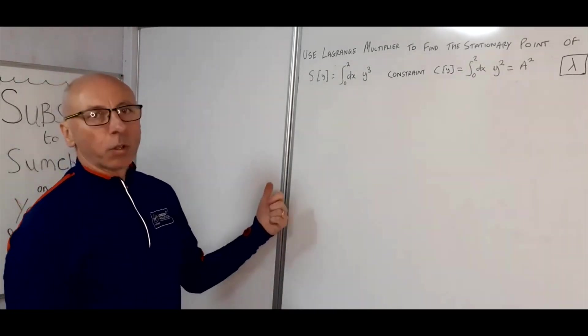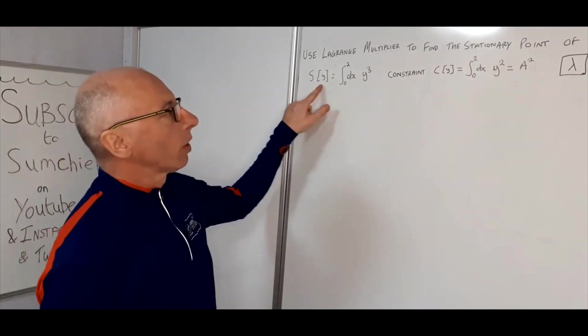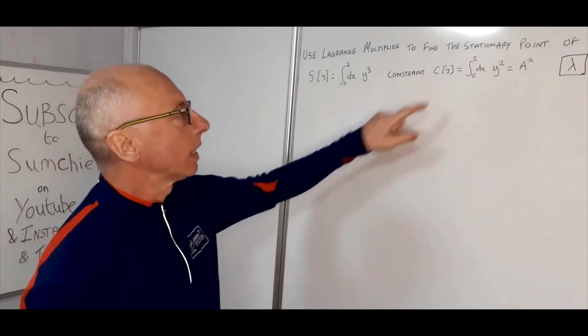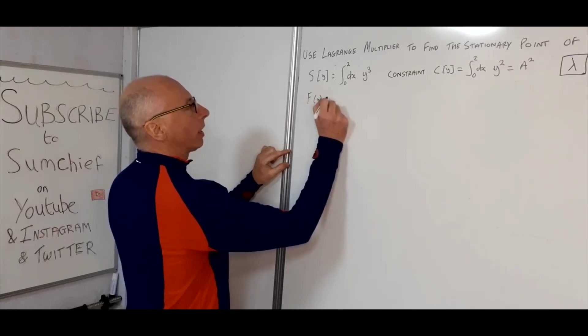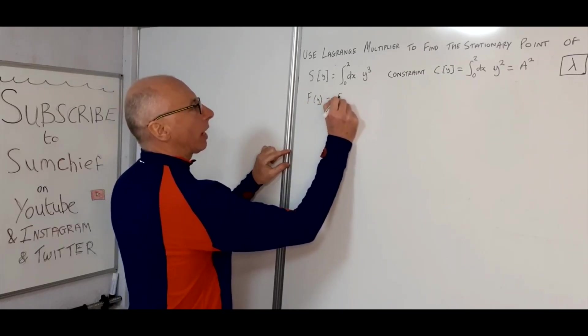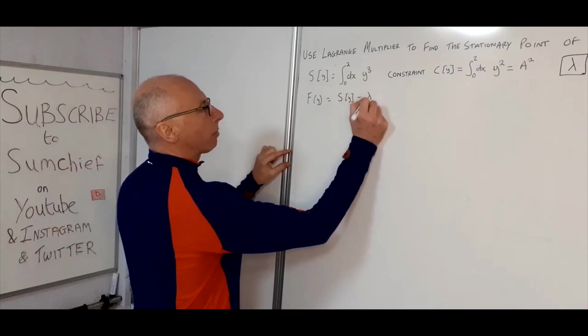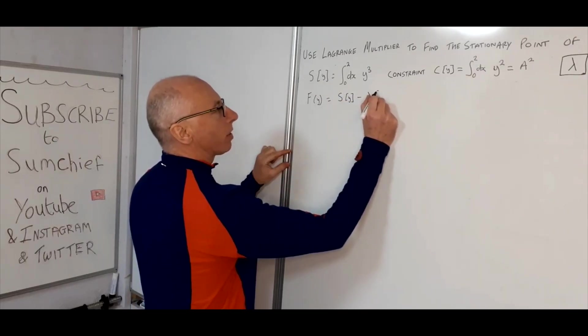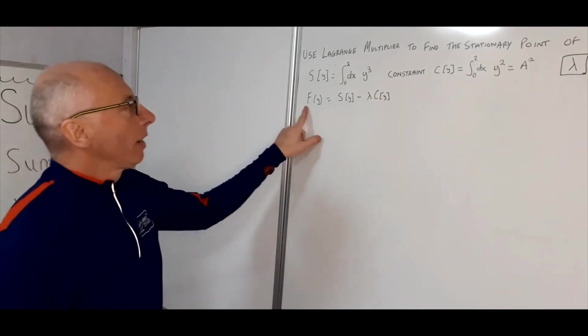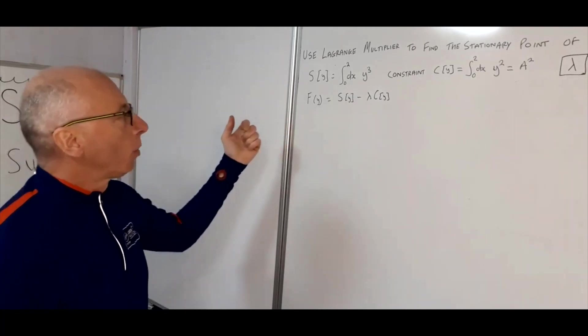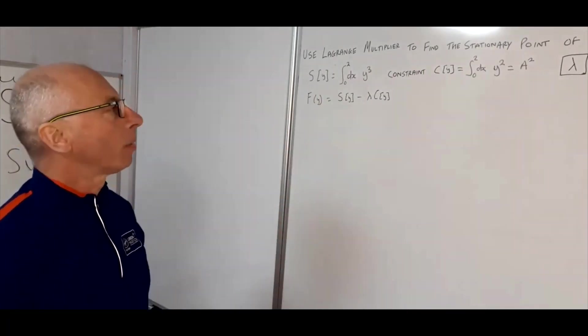So first of all what we do is we set up a new functional made up of this functional S and this functional C. So basically F(Y) equals S(Y) minus lambda times C(Y). That's the main part of the functional that we're trying to work with here now because this is our constraint, so we put the two together and that's going to help us get our result.